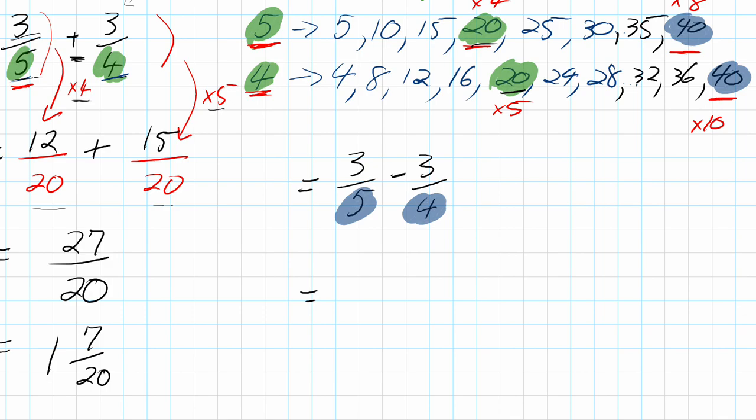We're going to rewrite this fraction. The number on the bottom is 40. To get to that 40, we did 4 times 10 and 5 times 8. So I have to do the same with the numerators. 3 times 8 equals 24, and 3 times 10 equals 30 over 40. Now I'm going to bring down that operator, which is subtraction.